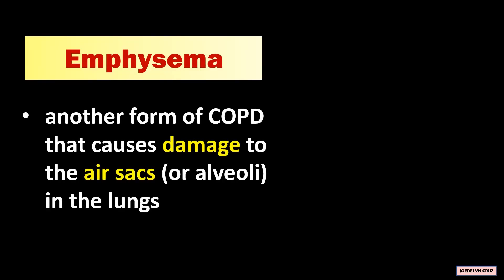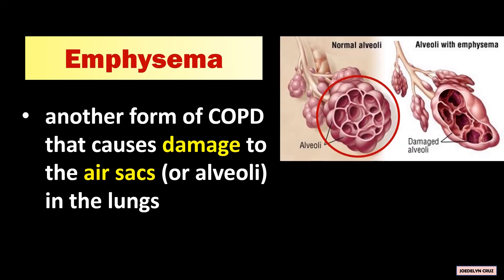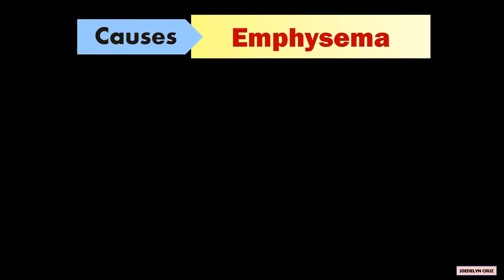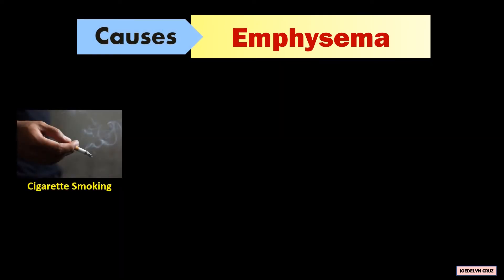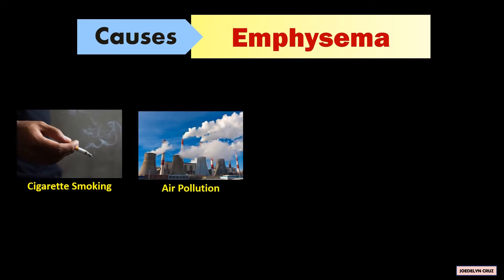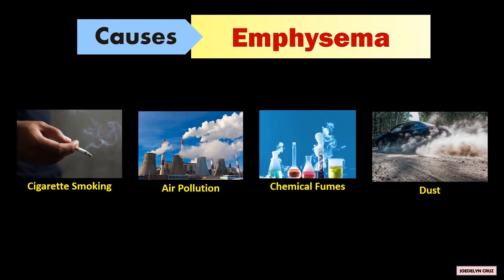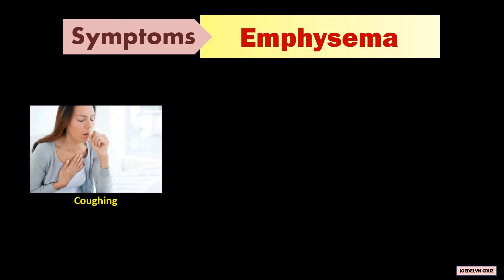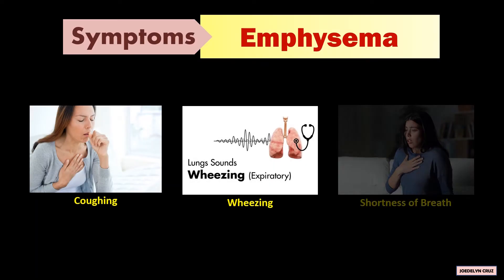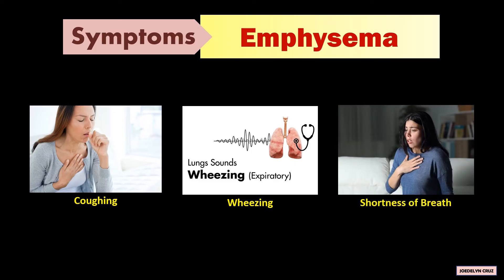Emphysema is another form of COPD that causes damage to the air sacs, or alveoli, in the lungs. In this picture, these are the normal alveoli, while these are the damaged alveoli. The primary cause of emphysema is cigarette smoking, and other causes are air pollution, chemical fumes, and dusts. Frequent coughing, wheezing, and shortness of breath are the symptoms of emphysema.